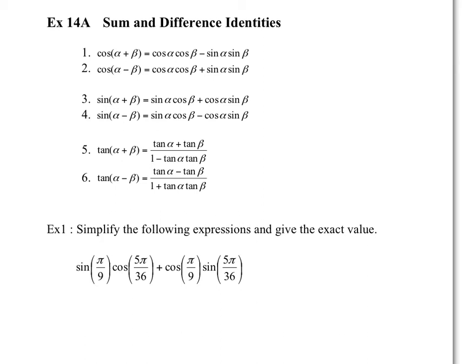Hi students, welcome to exercise 14a, the sum and difference identities. These are found directly on your formula sheet, probably exactly as written here. Basically, these are different ways to find exact values of angles that we don't necessarily have on the unit circle.